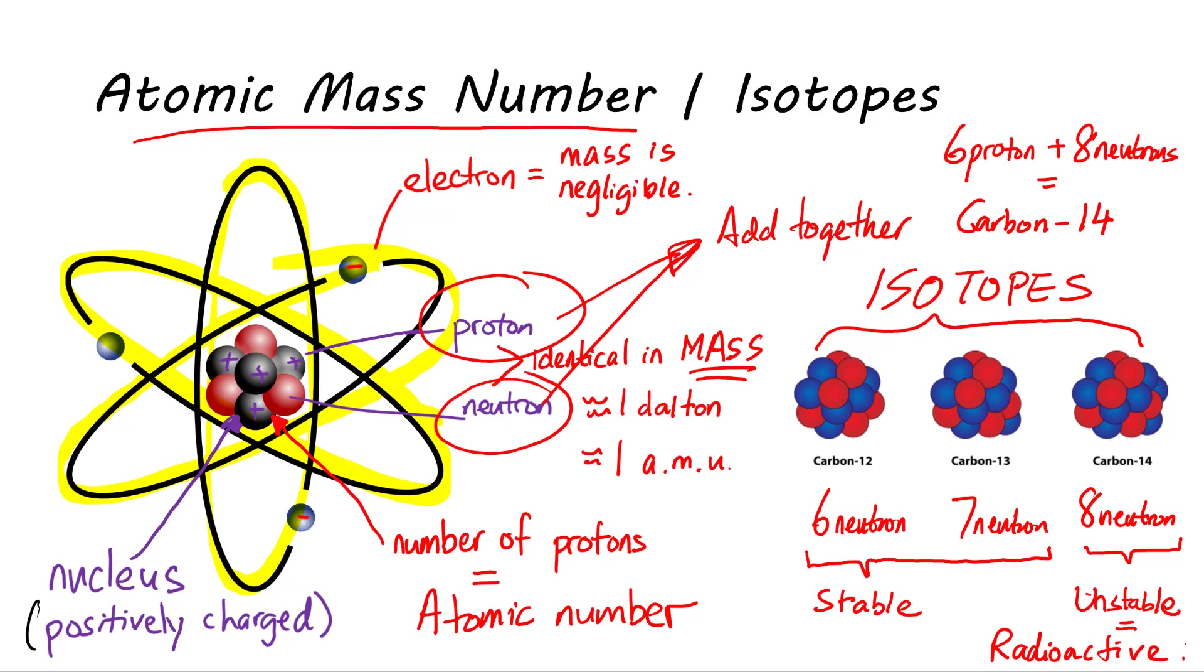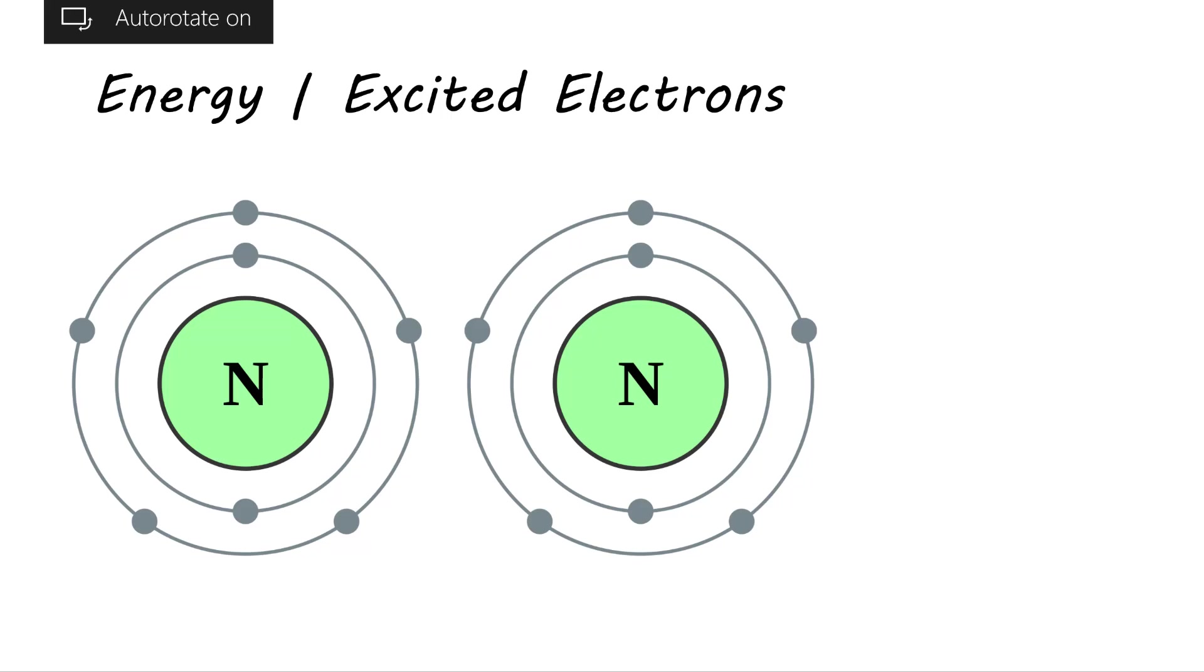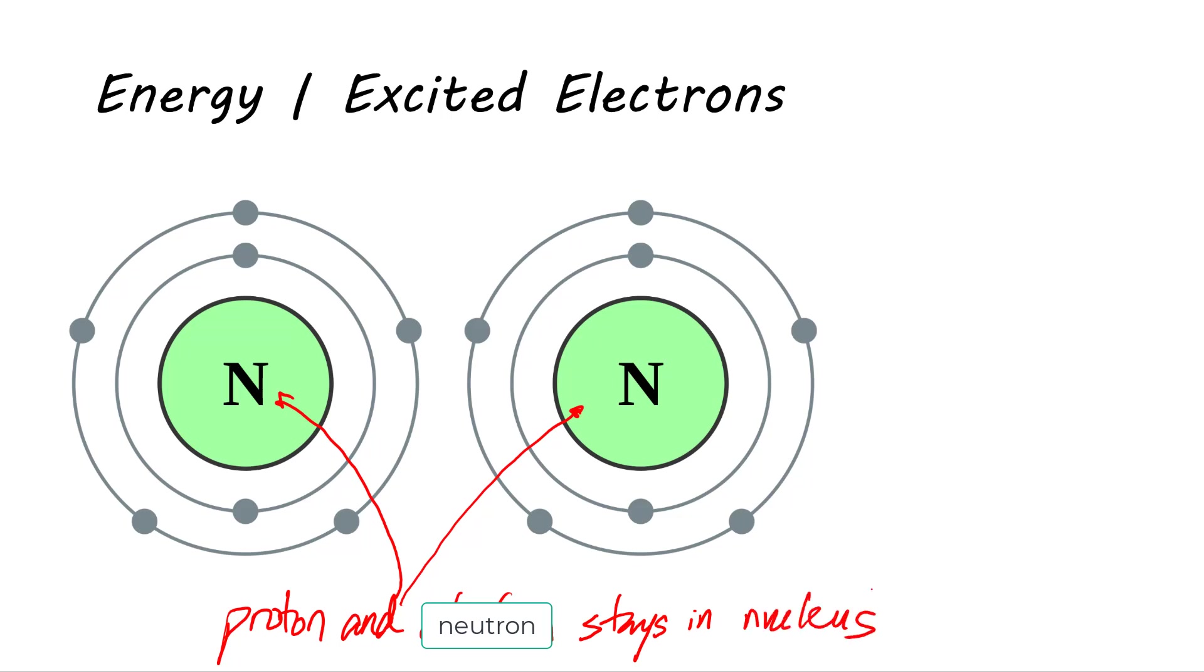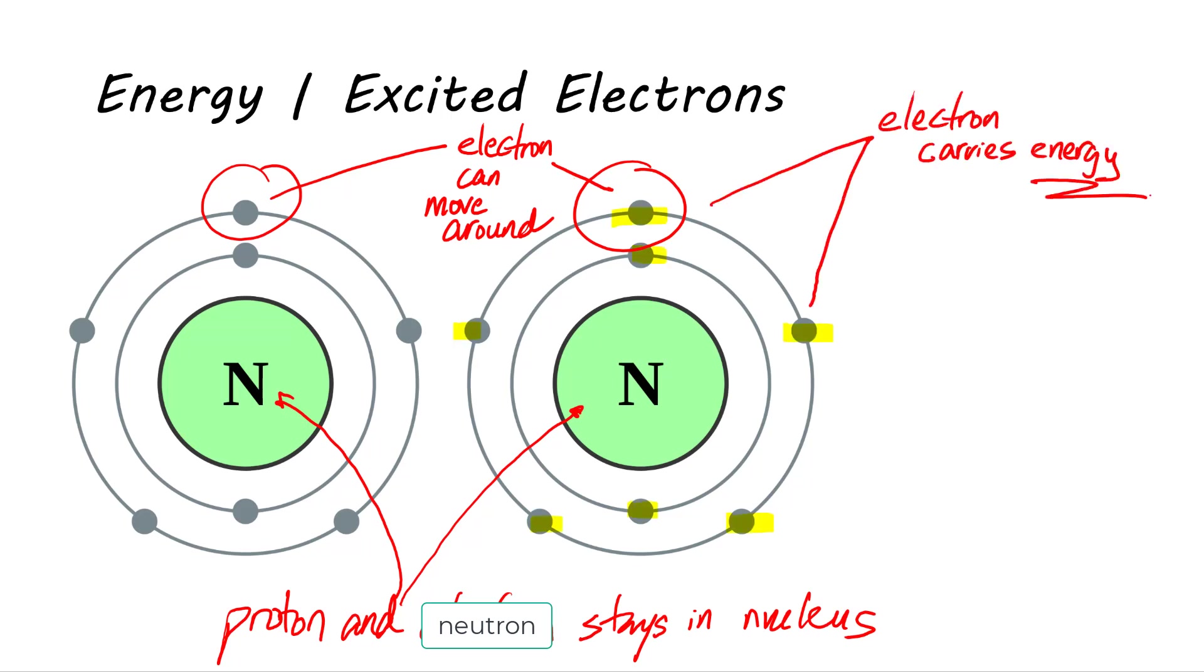When two atoms come close and interact with each other, their protons and neutrons don't move around between nucleus, but their electrons can move around, and as a result, a chemical reaction can happen. Now, here is the idea. Each atom's electron carries different amounts of energy, which is the ability to cause change by doing work. Electrons are found in different levels of shells. The further the shells away from the nucleus, the higher the amount of energy in the electron. So, if an electron gets more energy, or excited, it will go to a higher energy level. And when electron loses energy, it will fall back to the shell closer to the nucleus.